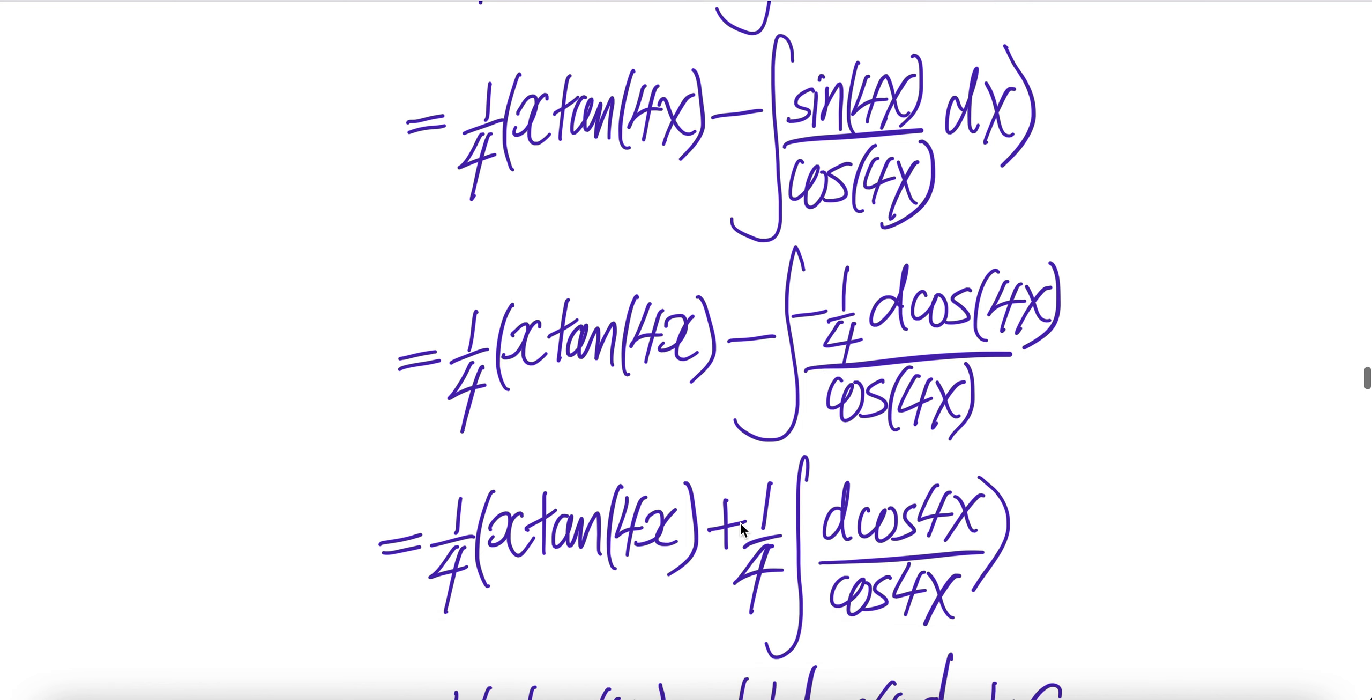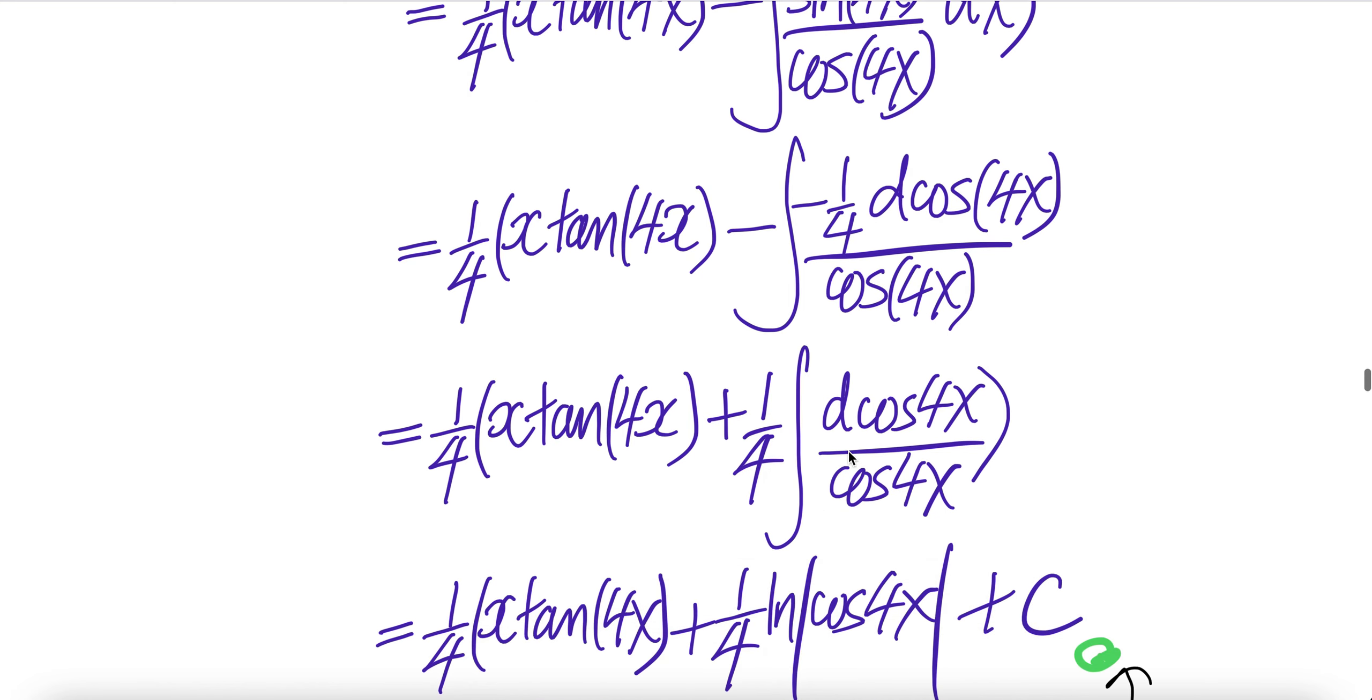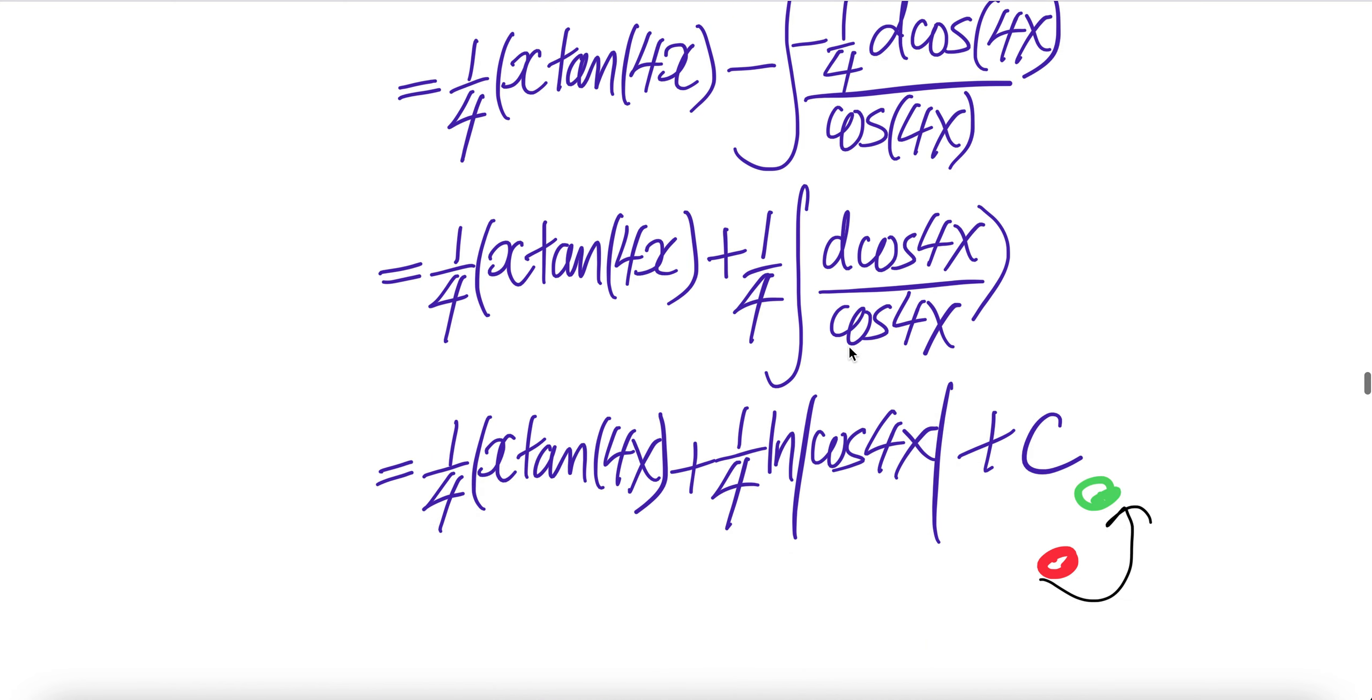Minus one quarter out. Multiply it, plus one quarter. Integral of d cos 4x over cos 4x. The integral of this is simply the natural log of absolute value cos 4x plus c. Done.